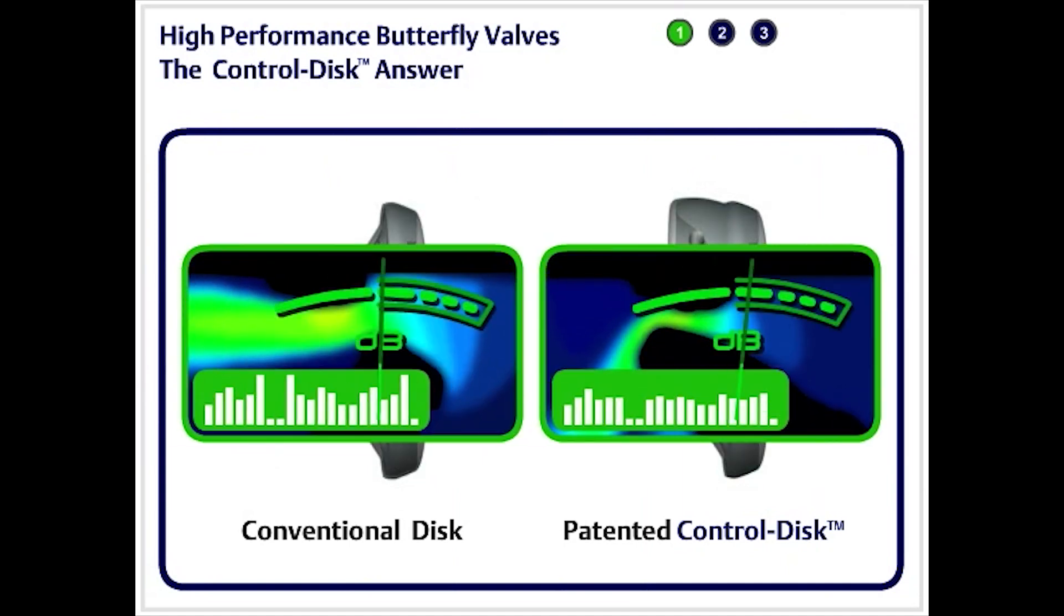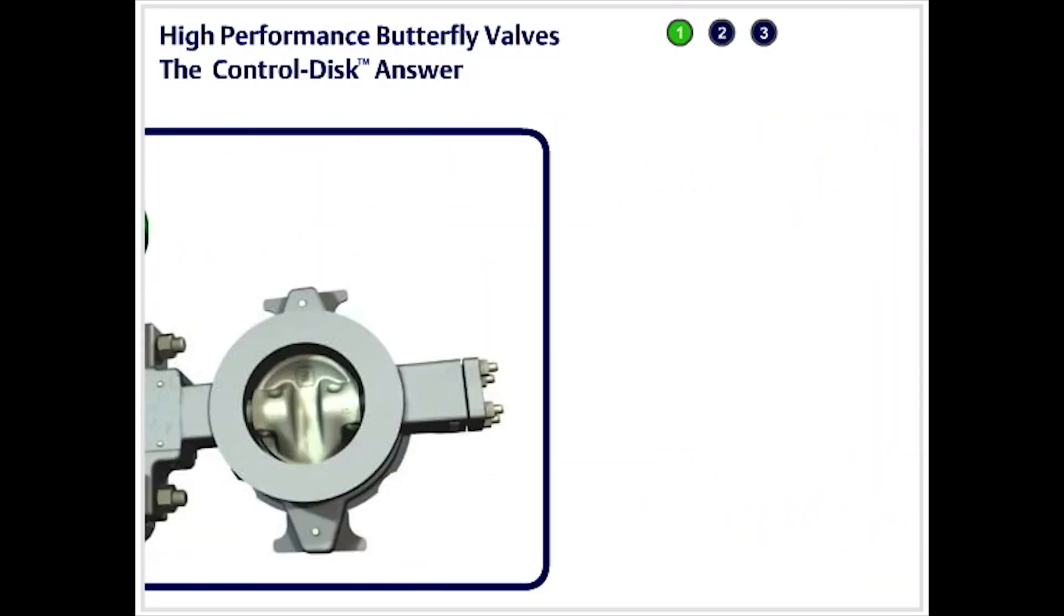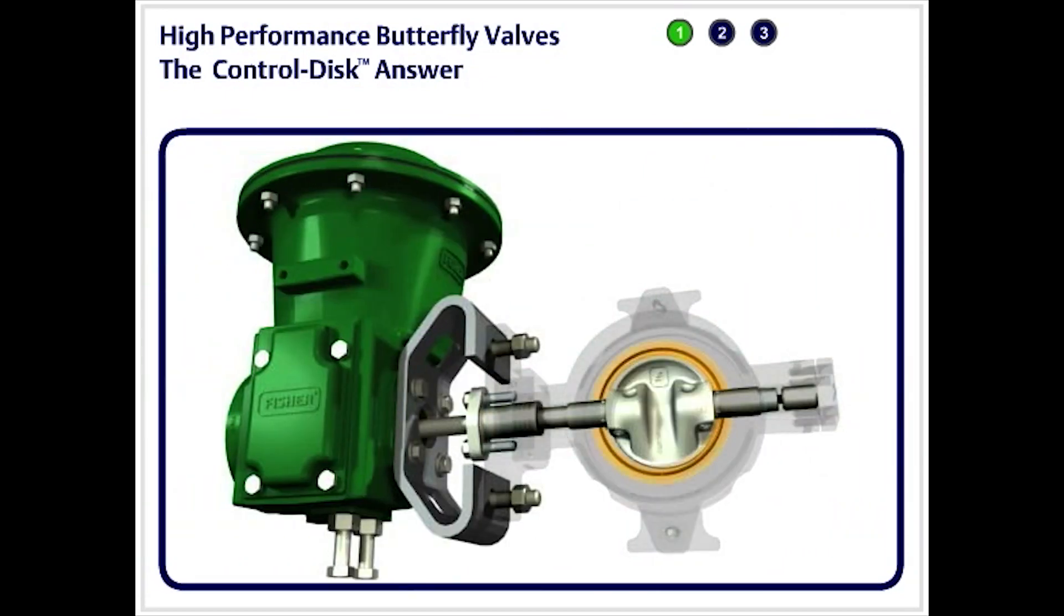The unique disk reduces flow stream turbulence when controlling near the valve seat. Less turbulence generates less noise. There's also less impact on the disk seal, so service life is extended.